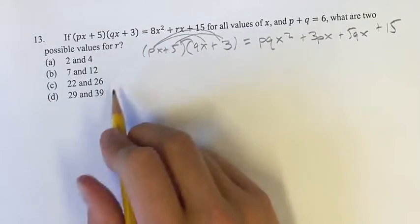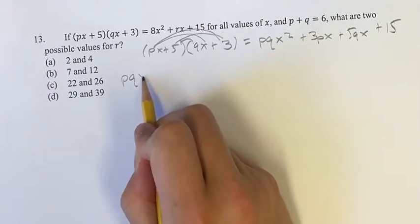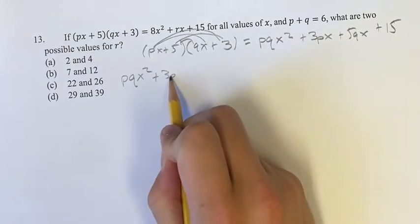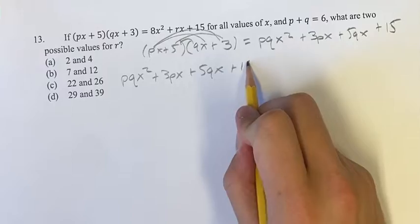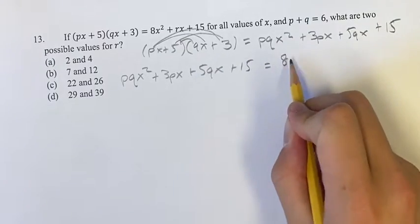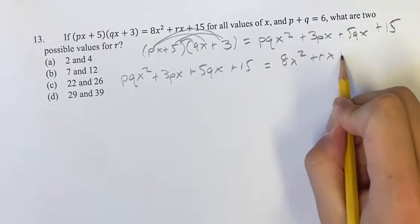And this is going to be equal to the other side, so we have pqx² plus 3px plus 5qx plus 15 is equal to 8x² plus rx plus 15.